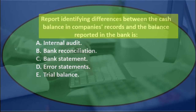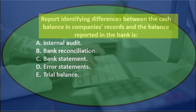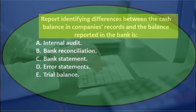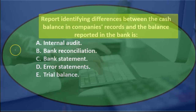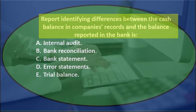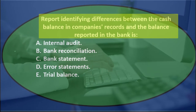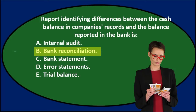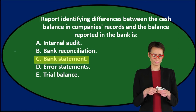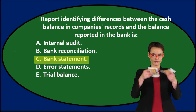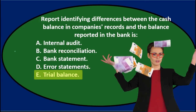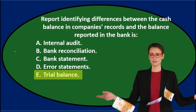Next question. The report identifying differences between the cash balance in a company's records and the bank balance reported by the bank is... A. Internal audit. B. Bank reconciliation. C. Bank statement. D. Error statement. Or E. Trial balance.